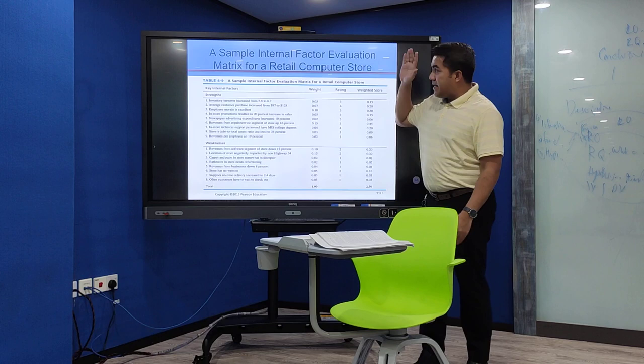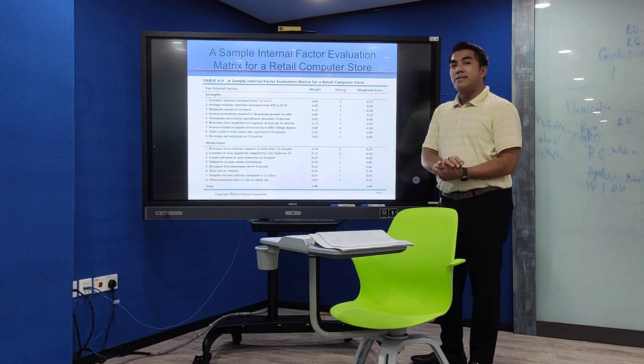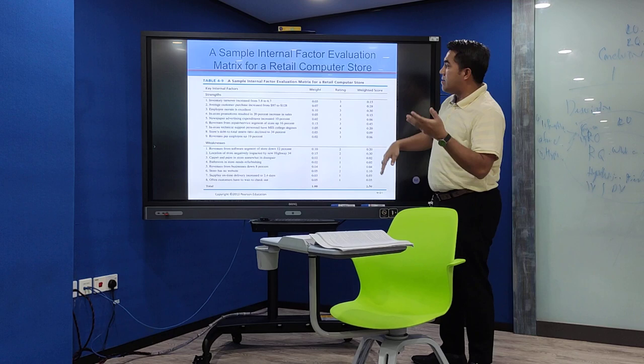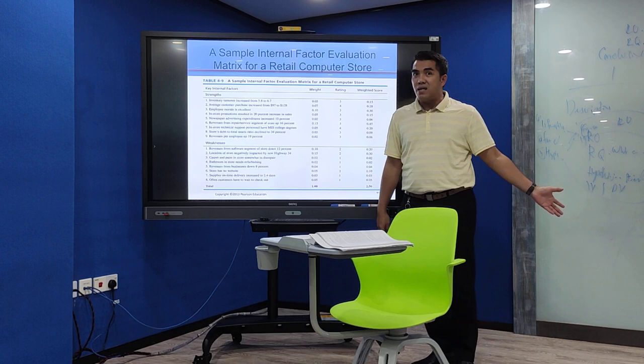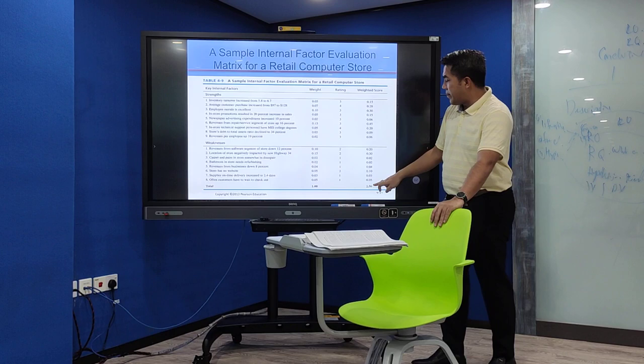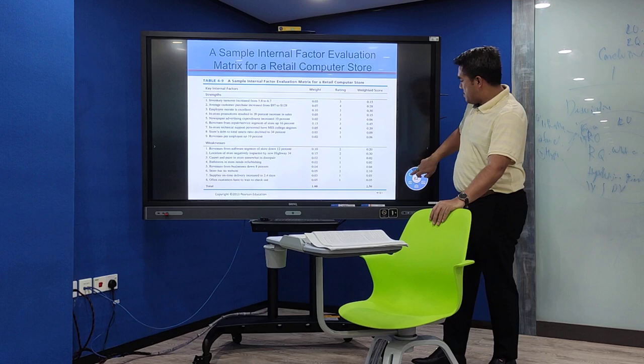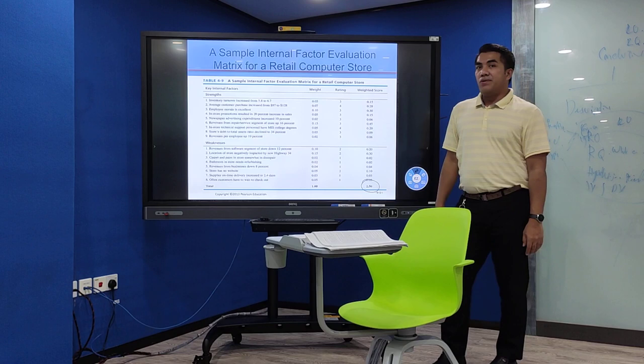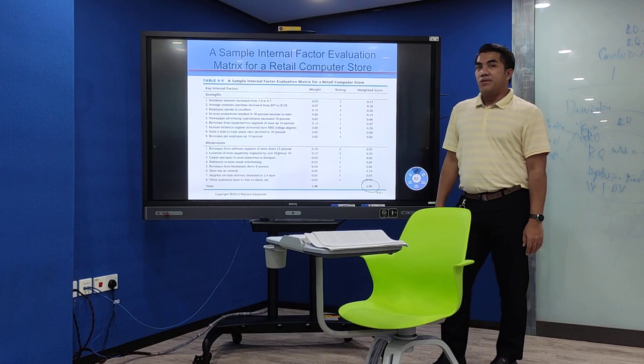For the IFE matrix specifically, for strengths you assign only ratings 3 or 4, and for weaknesses only 1 or 2 — where 1 is the weakest and 2 is slightly better. You then multiply the weight by the rating to get the weighted score, and sum those up to get the total value for your IFE matrix. This is what you are going to do for your group project, and that is the end of the chapter. Peace out.